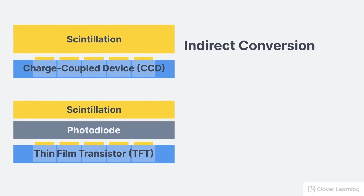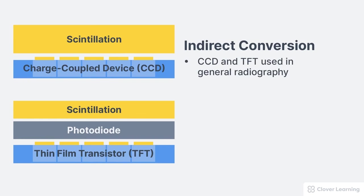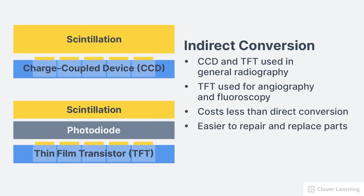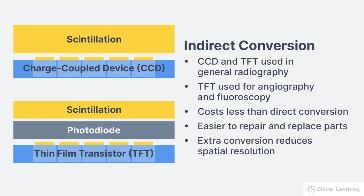Both CCD and TFT indirect conversion DR systems are used in general purpose radiography, and TFT indirect conversion DR systems are typically used in angiography and fluoroscopy. Both types of indirect conversion DR systems cost less than direct conversion DR systems, and it is also easier to repair and replace parts on indirect conversion DR systems. However, that extra step of converting x-ray photons to light reduces spatial resolution.